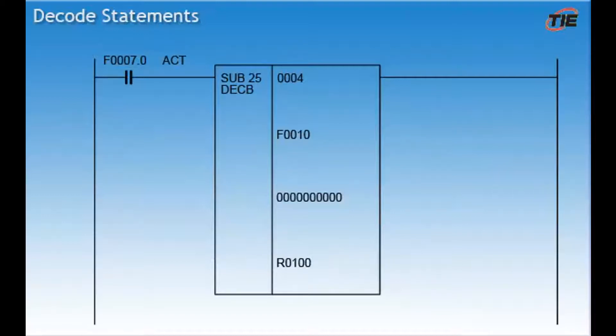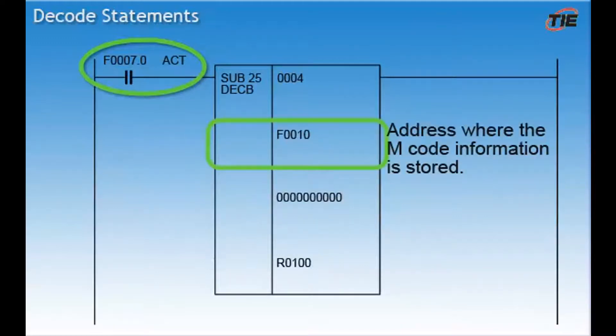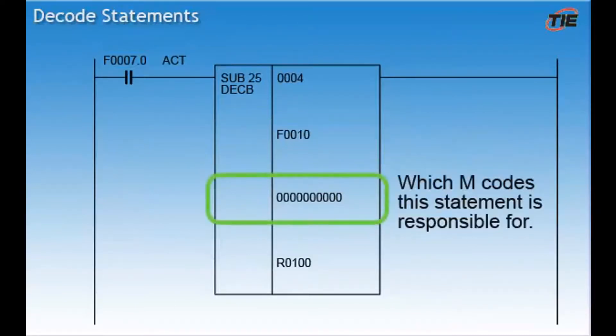Let's take a close look at how the decode statement works in the ladder. Now, a decode statement is a function statement. All function statements are given a unique number. In this case, FANUC is assigned sub 25 as the decode statement. Here's a breakdown on how the decode statement works. There are four lines in the decode statement. Line number one is for your setup information. More on this in just a moment. When the decode statement is told to start by a strobe signal, F7.0, it's going to take a look at line two. Line two has the address where the M code number that was just called is stored. Now, each decode statement is responsible for a certain number of M codes. Line three is the start of the M code numbers for this decode statement. This will be described in detail shortly.